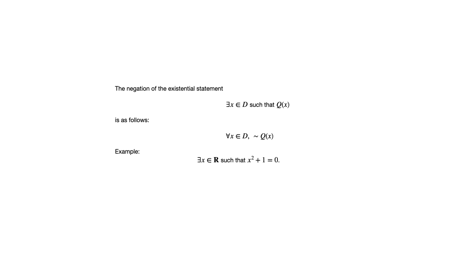Again, let's look at an example. There exists x in the set of real numbers such that x squared plus 1 equals 0. The statement we began with is false. The negation would be: for all x in ℝ, x squared plus 1 is not equal to 0.